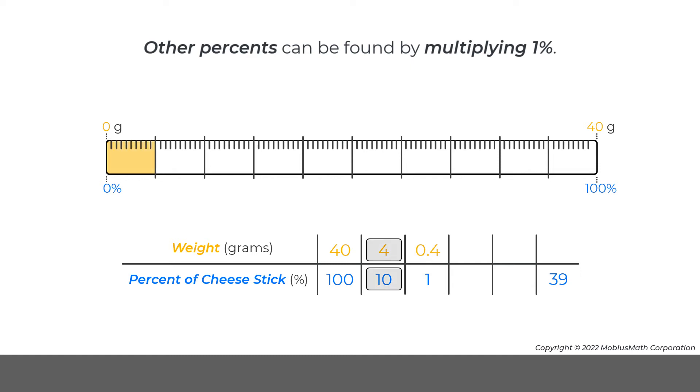First, 10% and 4 grams can be doubled to get 20% and 8 grams. Then, 20% and 8 grams can be doubled to get 40% and 16 grams. Finally, 40% minus 1% is 39%, so 16 grams minus 0.4 grams is 15.6 grams.